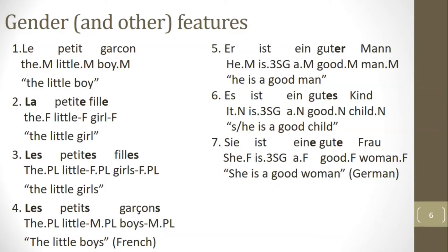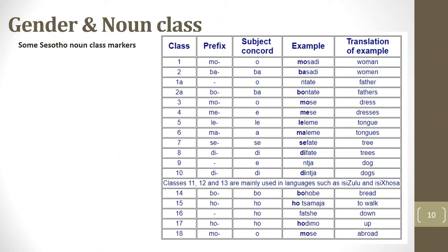Some languages use noun classes in a more general sense rather than gender per se. All indigenous South African languages, borrowing from Afrikaans, use noun classes. Moving beyond Indo-European languages, having two or three genders is on the low side for classifying nouns. In the Bantu language family there are many ways of classifying nouns — perhaps up to 18 different noun classes. For example, Sesotho noun class markers come in pairs: 1 and 2, 1a and 2a, 3 and 4, 5 and 6, 7 and 8, 9 and 10, and so on.